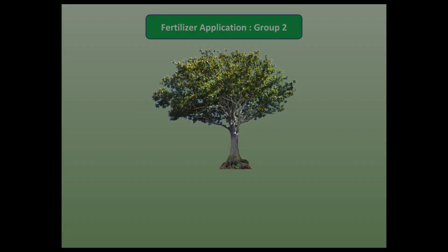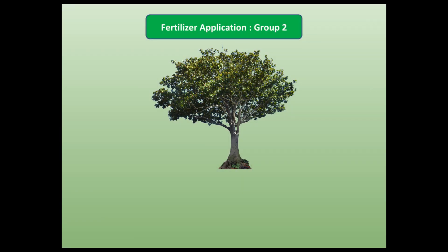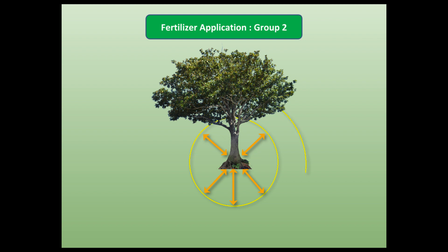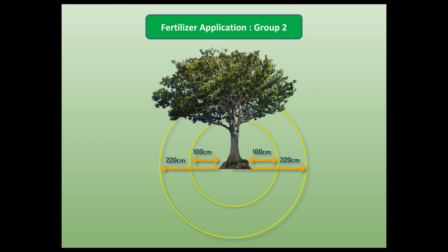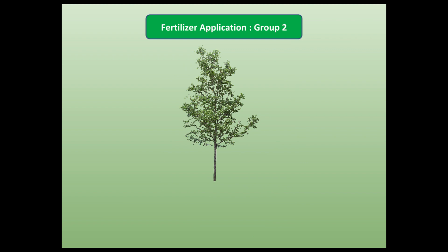In Group 2 — medium-sized trees like apple, peach, plum, guava, sapota, pear, and custard apple — the mouth of a fruiting tree is placed around the tree in all directions starting at 100 centimeters from the trunk, spreading up to 220 centimeters, and 5 to 20 centimeters below the soil surface. Even though these trees are smaller than mango and lychee, their active roots are located farther from the tree trunk than those in Group 1.